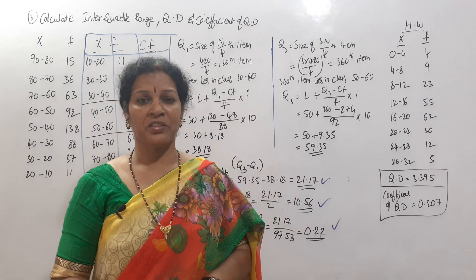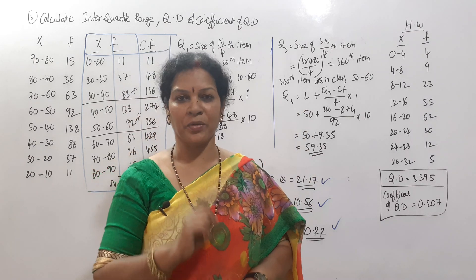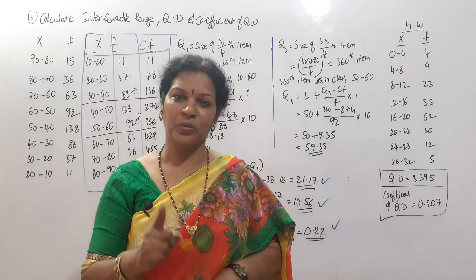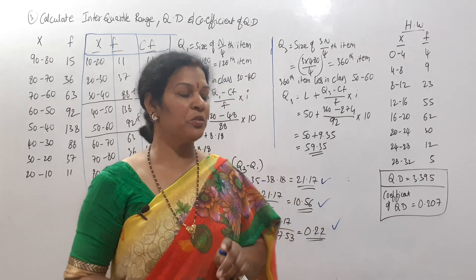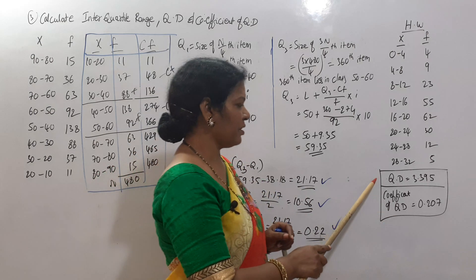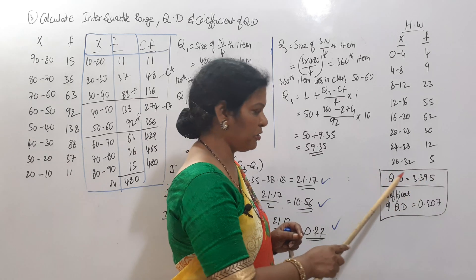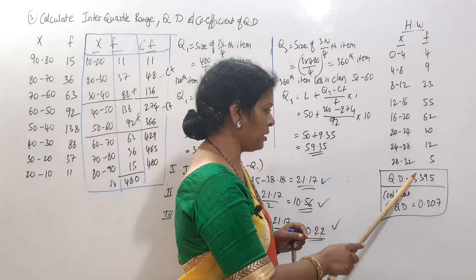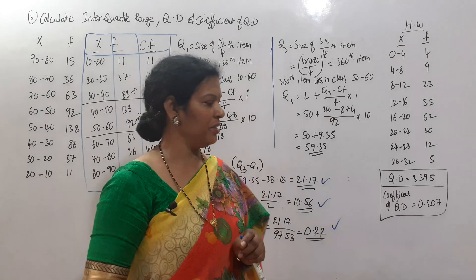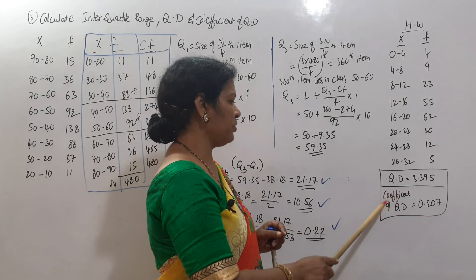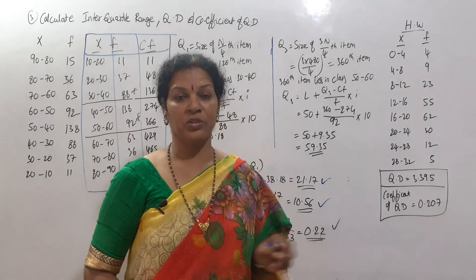The first step is CF, then Q1 and Q3, and then apply the formula. The Quartile Deviation answer is 10.585 and the Coefficient of Quartile Deviation is 0.207.